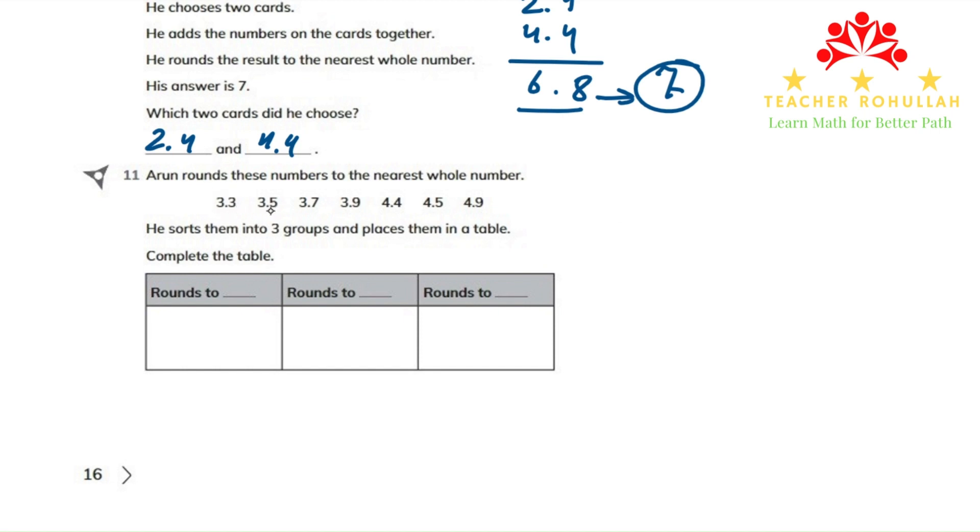The numbers are 3.3, 3.5, 3.7, 3.9, 4.4, 4.5, and 4.9.